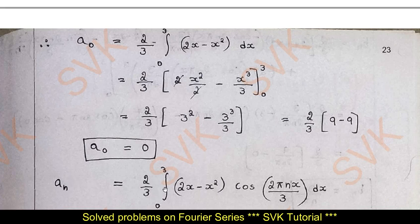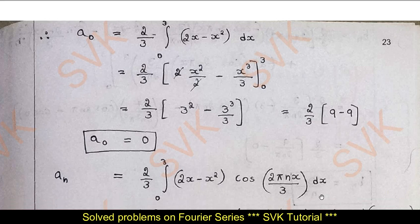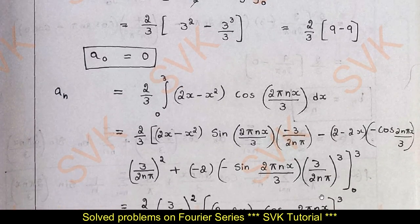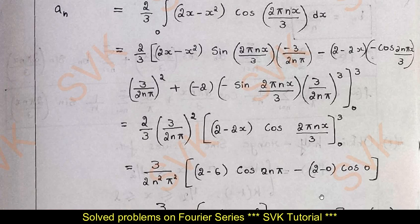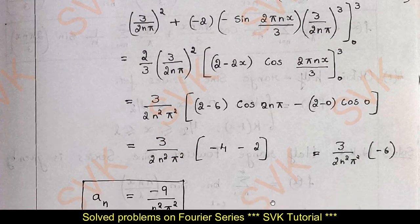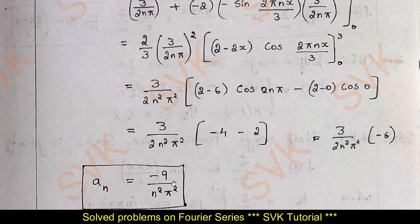aₙ is given by (2/3) ∫₀³ (2x − x²) cos(2nπx/3) dx. Applying Bernoulli's rule, we get aₙ = −9/(n²π²).